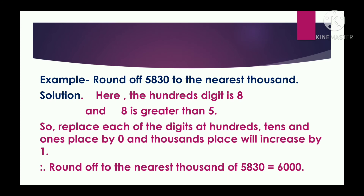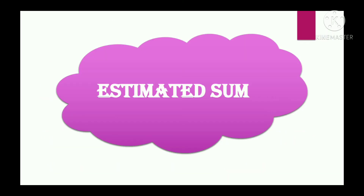I hope you have understood how to round off numbers to the nearest thousand. Similarly you can do this for 10,000 by looking at the thousands place and replacing thousands, hundreds, tens, and ones digits by zero, in the same manner as we did for the nearest thousand. Now let us see what an estimated sum is and how we find it.